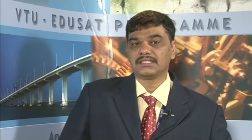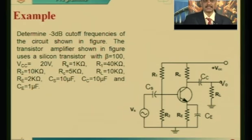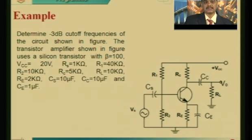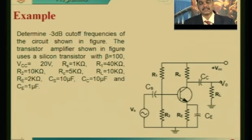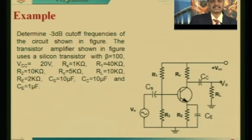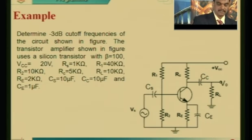For the example: determine the minus 3 dB cutoff frequencies of the transistor amplifier shown in the figure. The circuit uses a silicon transistor with beta = 100, V_cc = 20 V, R_s = 1 kΩ, R1 = 40 kΩ, R2 = 10 kΩ, R_c = 5 kΩ, R_L = 10 kΩ, R_e = 2 kΩ. C_s and C_c are 10 µF each, and C_e = 1 µF.